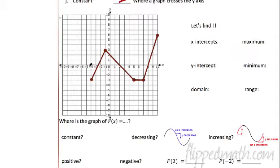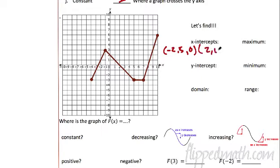The x-intercepts — that's where it crosses the x-axis. We can see that occurs at about negative two and a half. I'm approximating, but it looks like negative two and a half. What else? Two — so I'm writing it like a point: (2, 0), that means over two and up zero. And then eight. So those are our x-intercepts.